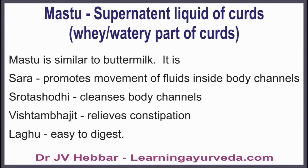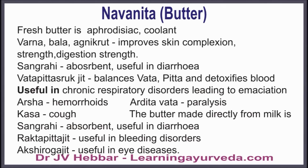Mastu, or supernatant liquid of curds, is similar to buttermilk. It promotes movement of fluid inside body channels, cleanses body channels, relieves constipation, and is easy to digest. Butter is aphrodisiac, coolant, improves skin complexion, strength, and digestion strength. It is absorbent, useful in diarrhea, balances vata and pitta, and detoxifies blood. Useful in chronic respiratory disorders leading to emaciation, hemorrhoids, paralysis, and cough. Butter made directly from milk is absorbent, useful in bleeding disorders, and good for eye disorders.